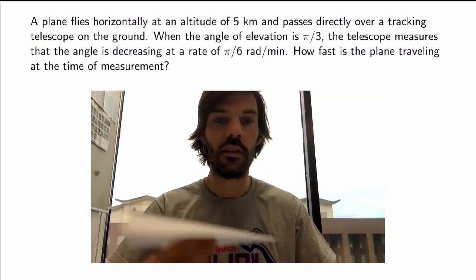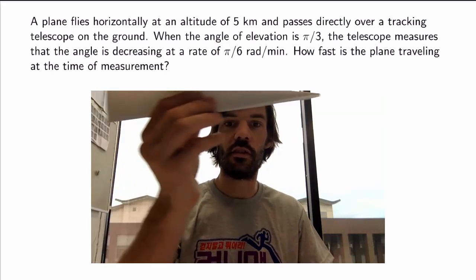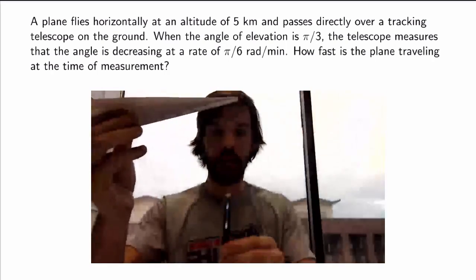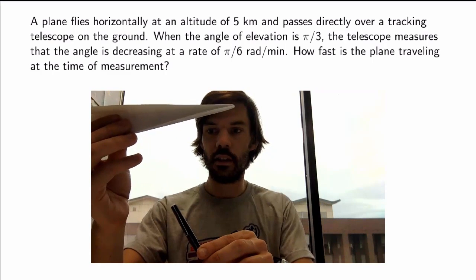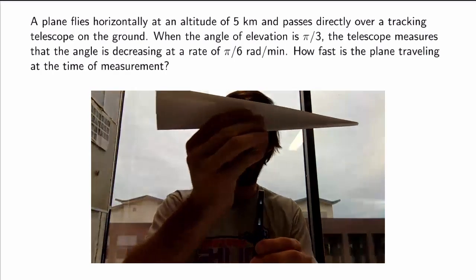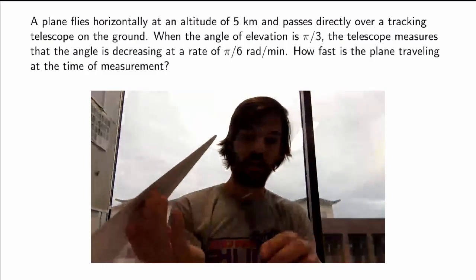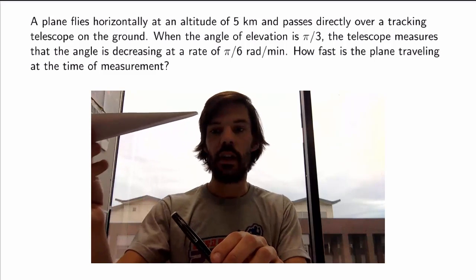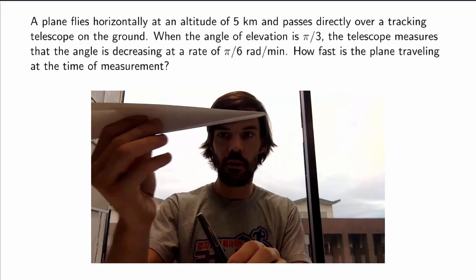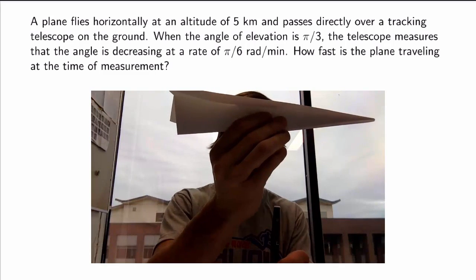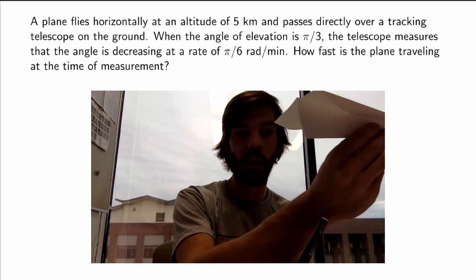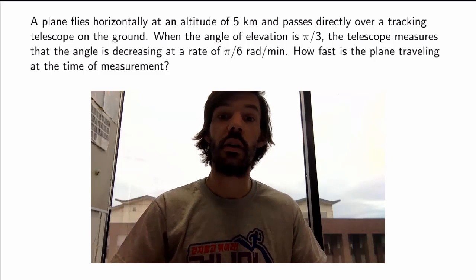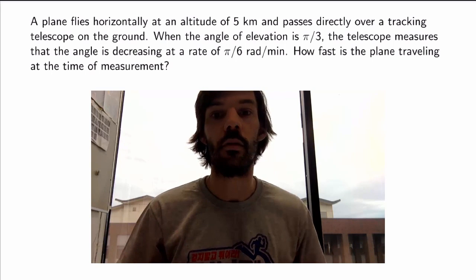Let me try to show you what this is about. You have a plane here which is travelling horizontally, and I have a tracking telescope on the ground that is somehow tracking the plane. As the plane moves, the angle between the telescope and the ground is changing. What I'm interested in is measuring the velocity of the plane — the rate of change of position of the plane — in terms of the rate of change of the angle between the telescope and the ground. That's a typical related rates problem.